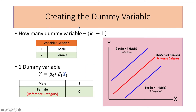When creating dummy variables, we need to adhere to the k minus one rule, where k refers to the number of categories. For example, the variable gender has two categories — male and female. So how many dummy variables will we create? Two minus one equals one, so for the variable gender we will have one dummy variable.